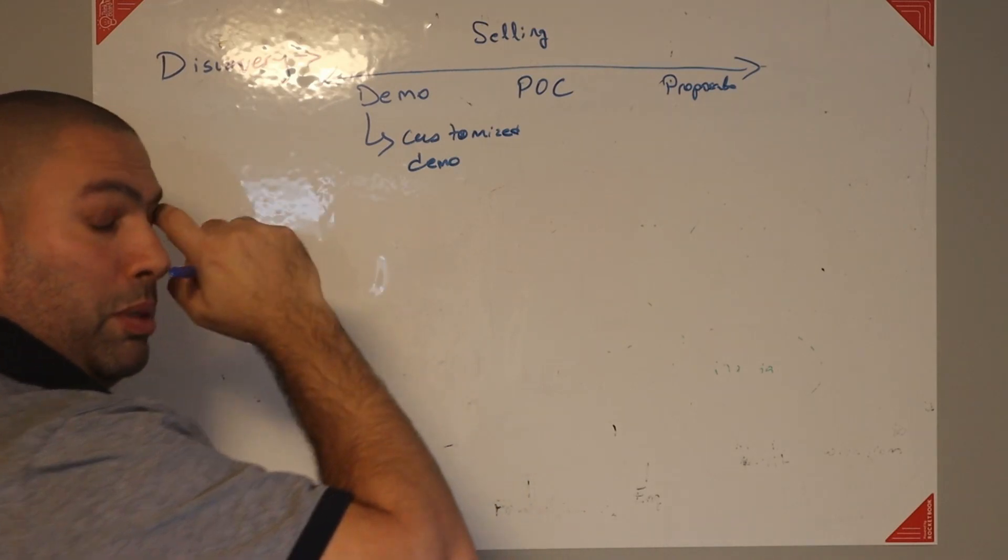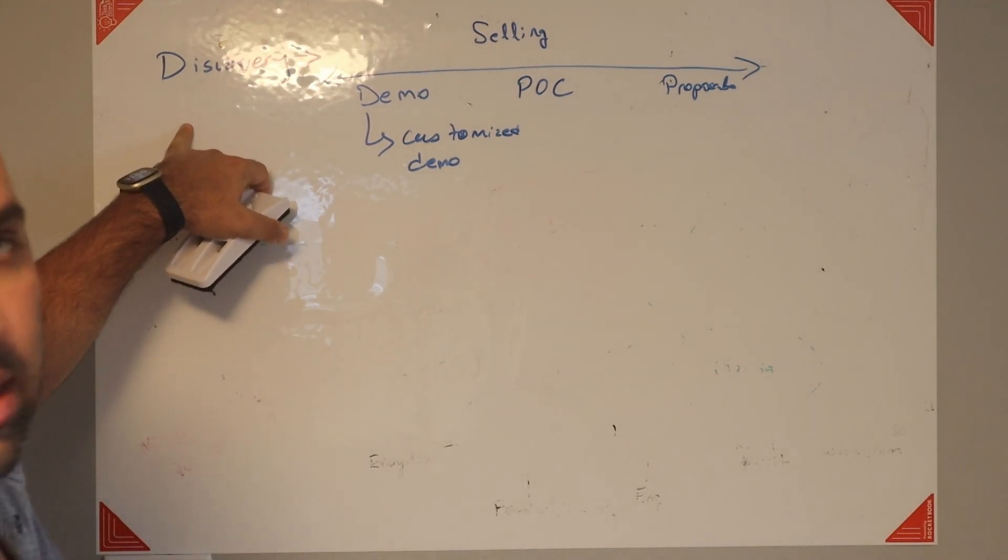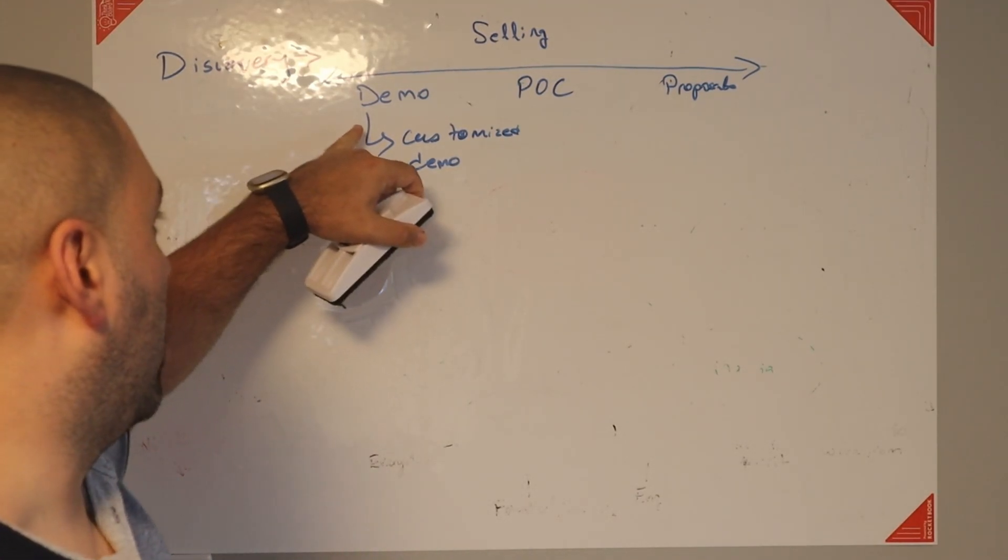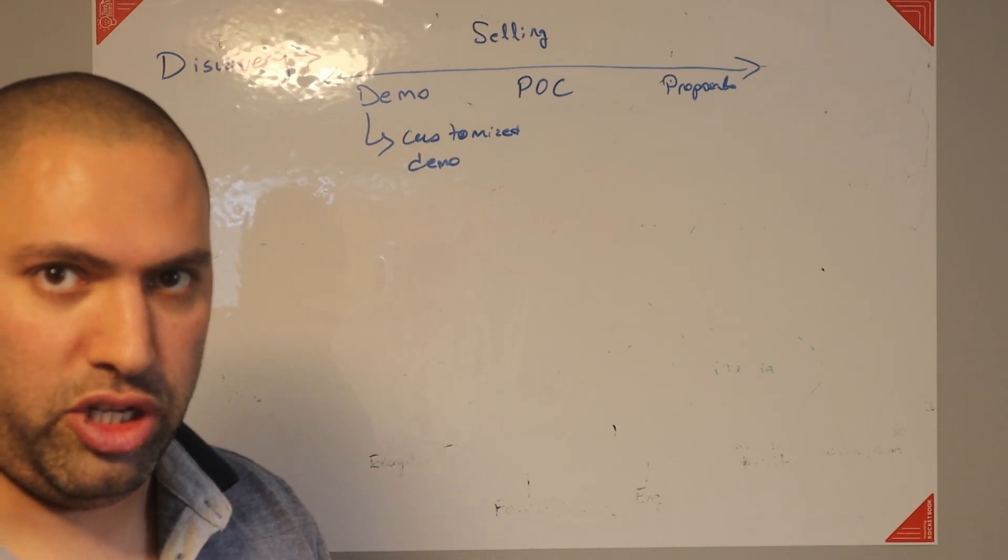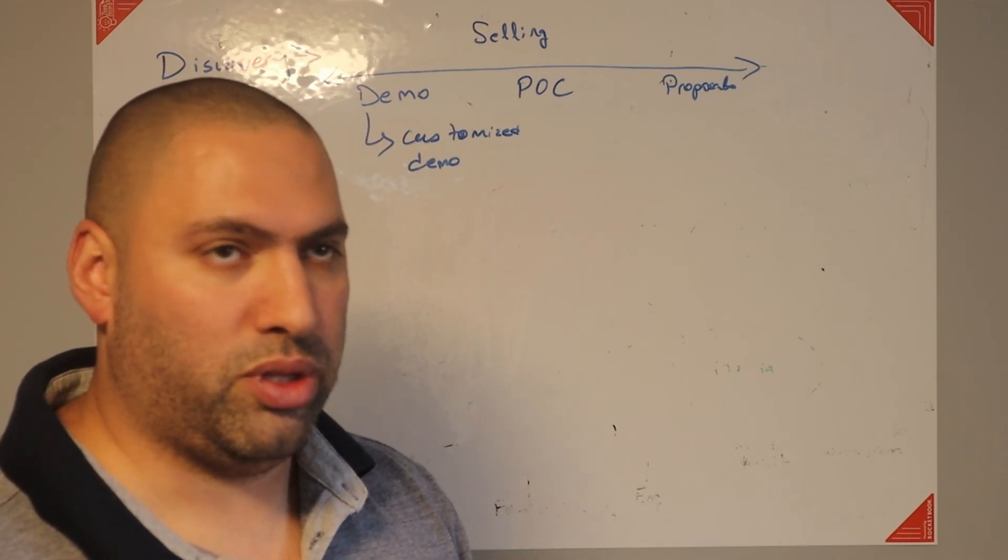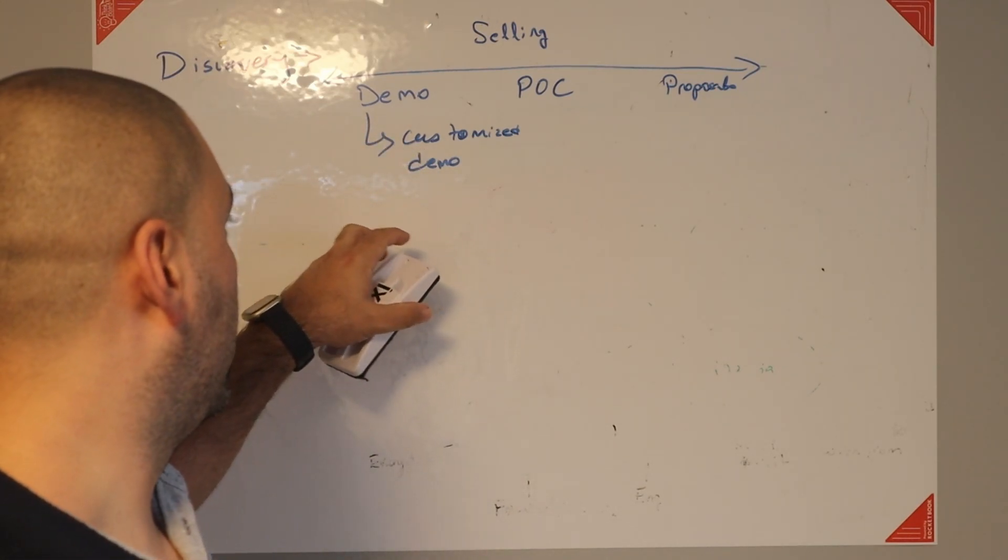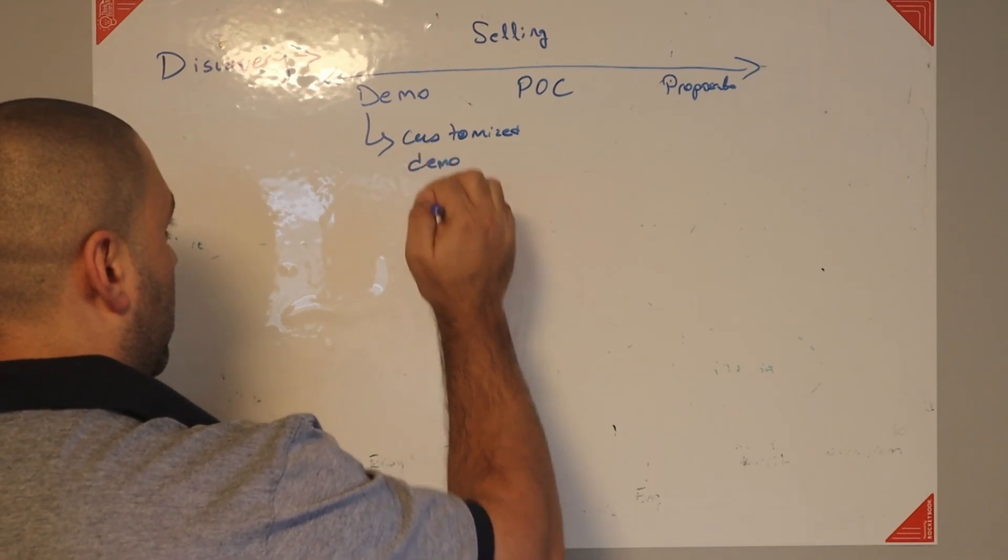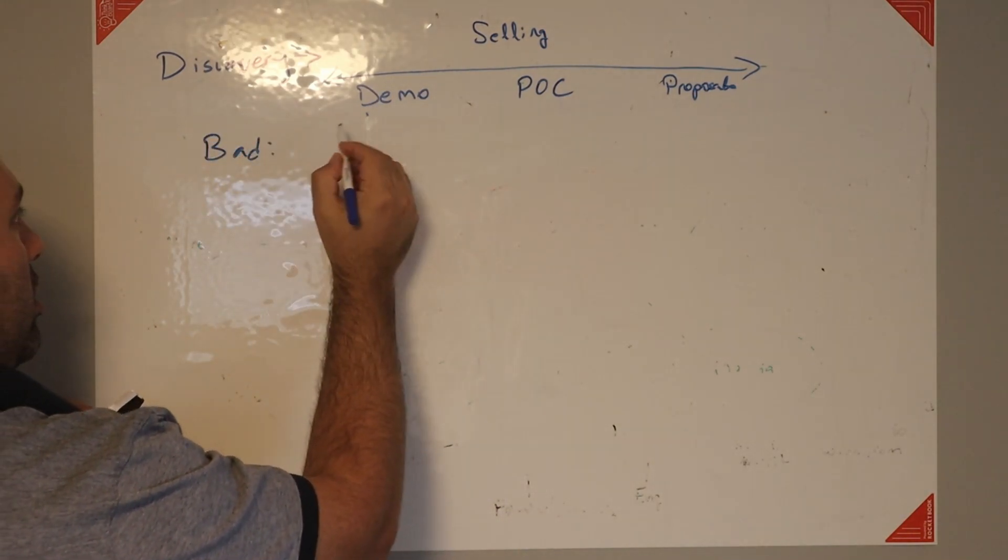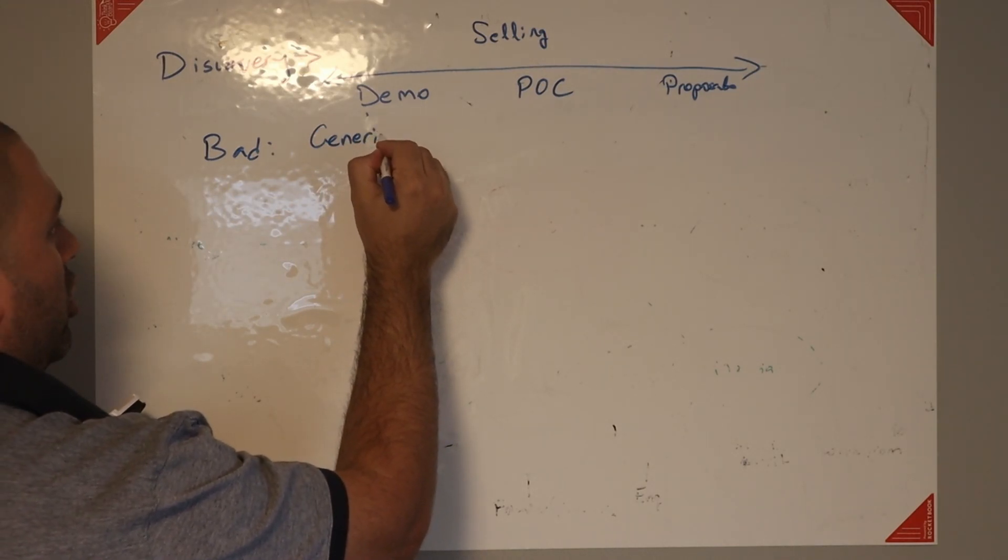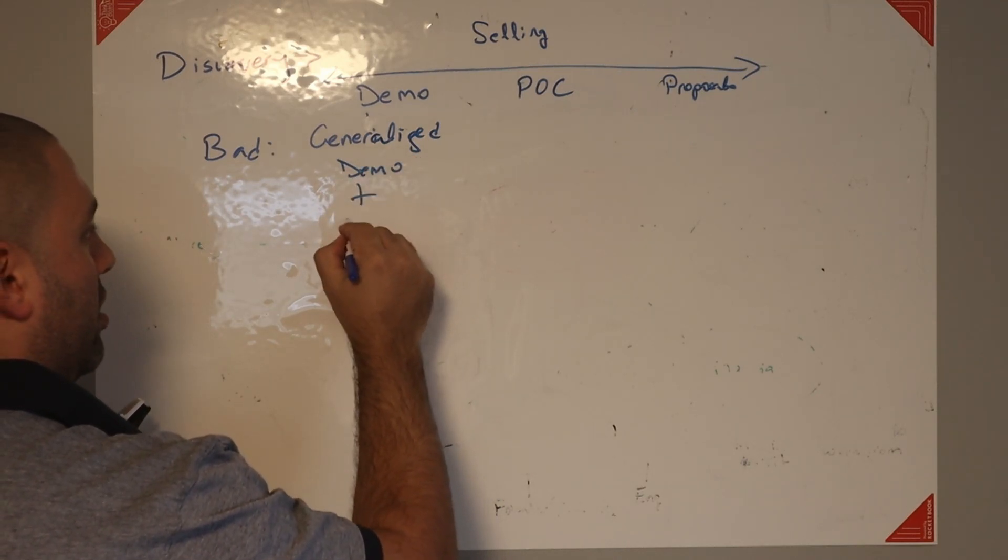And this is where I see most people fail in terms of speeding up the sales cycle. A lot of times, SEs are not involved in the discovery process. So they come in and do a demo. And it's not customized because they either got the incorrect information, incomplete information, or no information at all from the salespeople. Just show me the product, just do the demo. So they don't end up doing a customized demo. They do a generalized demo. So if they do a generalized demo, bad generalized demo, the SE will have to do another discovery during a demo.